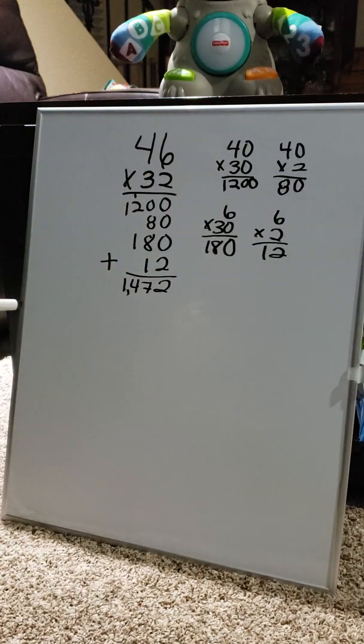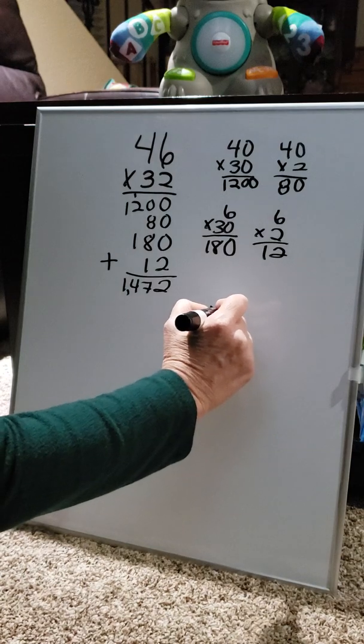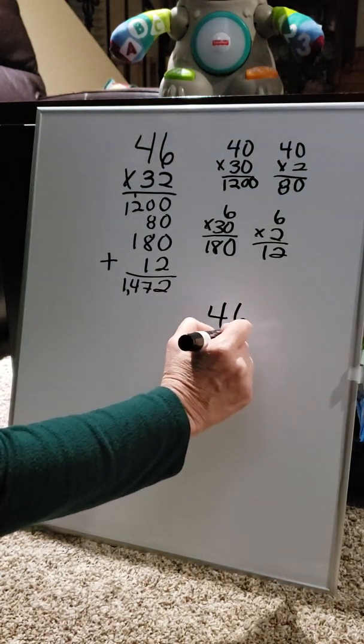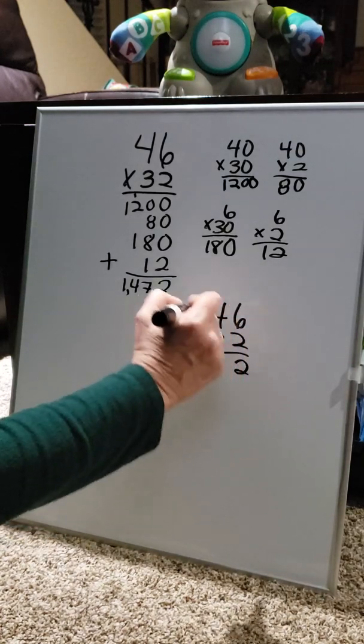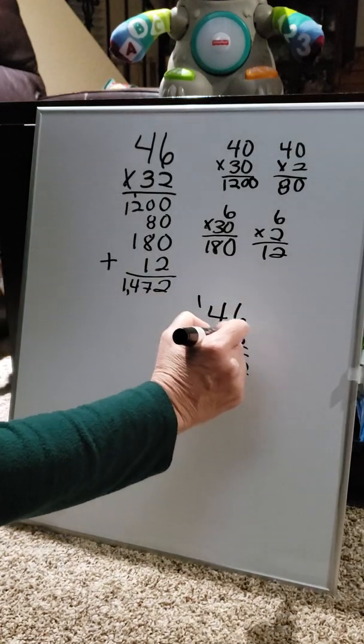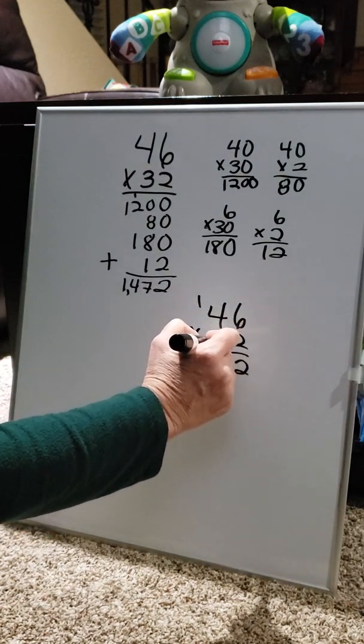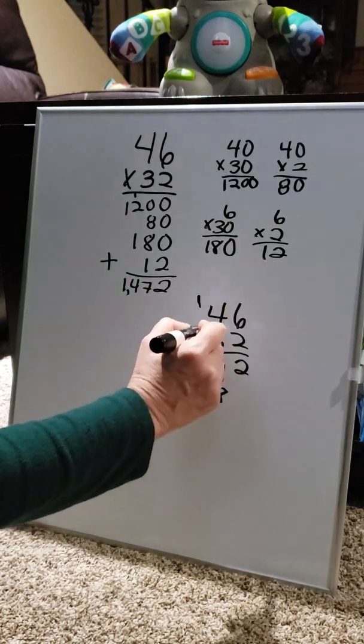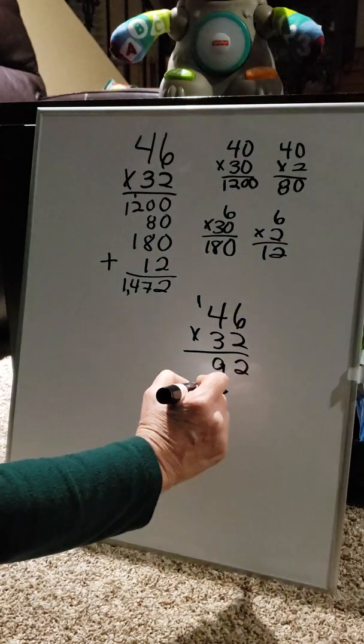However, I want to verify that's correct, so I'm going to do it with the common method. 46 times 32. 6 times 2 is 12. 4 times 2 is 8. Plus 1 is 9. 6 times 3 is 18. Carry the 1. 4 times 3 is 12. Plus 1 is 13.